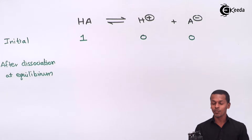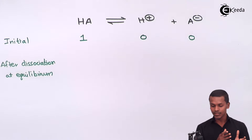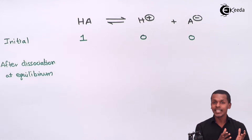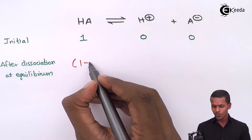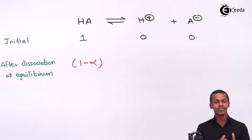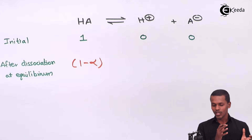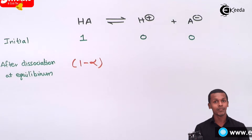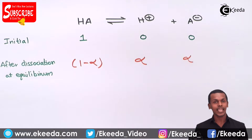After dissociation at equilibrium, the number of moles remaining: we understand that 1 mole of weak acid dissociates to form H⁺ and A⁻, depending on the degree of dissociation alpha. So out of 1 mole of HA, alpha moles have dissociated. Therefore at equilibrium we have (1 − alpha) moles of HA, alpha moles of H⁺, and alpha moles of A⁻.